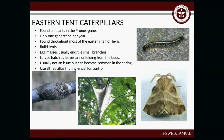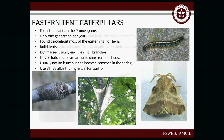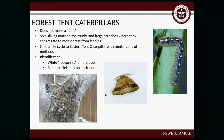The Eastern Tent Caterpillar — we have two types of tent caterpillars in the state. This one does build tents; the other one doesn't. The egg masses are usually encircled around smaller branches, and the larvae hatch as leaves are unfolding from the buds. These are usually not an issue, but they do become common in the spring. You're going to use BT (Bacillus thuringiensis) for control. Pay attention to the moth — you'll notice the difference between this tent caterpillar versus the other one; this one is lighter. The band pattern is a good way to tell the difference between the two adults.